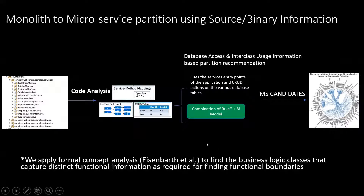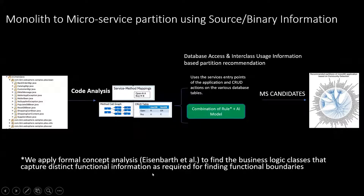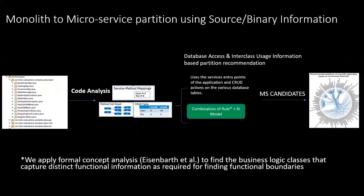The method call graph and access to resources — in this case we have shown DB access — are inferred from the analysis. Once we have the service entry points, the CRUD actions, and the business file flow information, we apply formal concept analysis, which is an existing technique, to find the business logic classes. This is the key step that captures distinct functional information required for finding functional boundaries and helps us understand the number of functions being implemented in the application. Once we have identified the key functional classes, we use this information for clustering, with these classes acting as central members and other classes pulled into each cluster based on inter-class usage patterns.